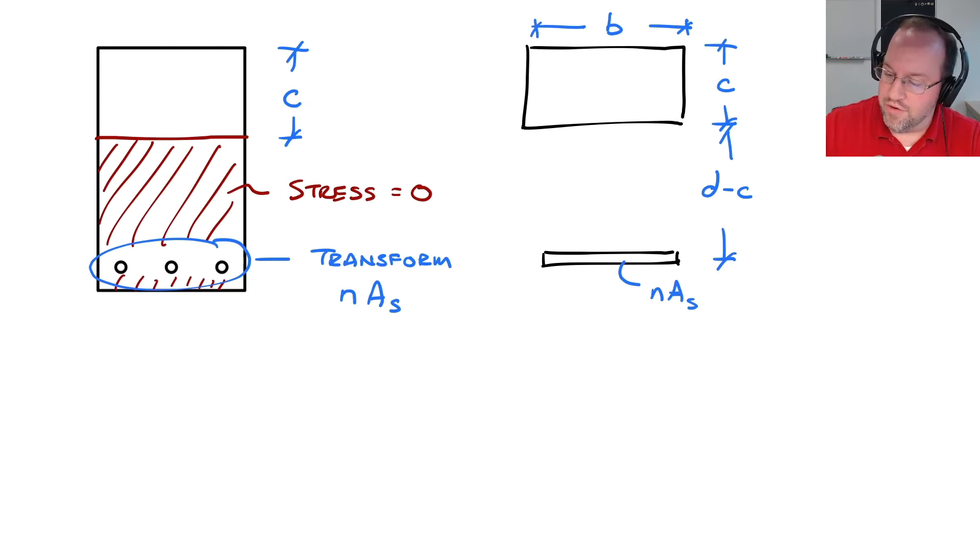In this diagram, by definition, this line is my neutral axis. So anything above that line is in compression, anything below it is in tension, and because it's all in tension, therefore I neglected all the concrete down here.